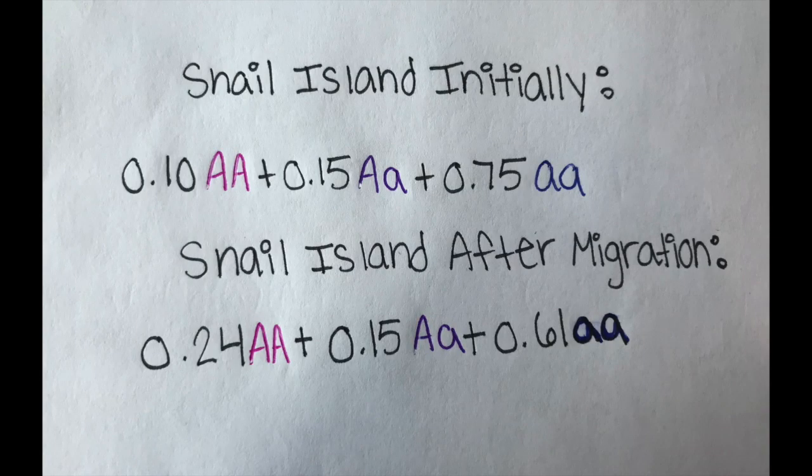In this picture, you can see the final results from before and after migration of Snail Island. We see that migration has caused the genotypic frequencies to start to change from favoring the homozygous recessive allele to favoring the homozygous dominant allele.